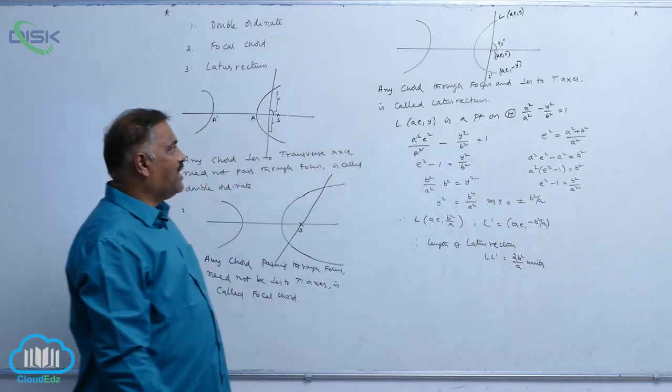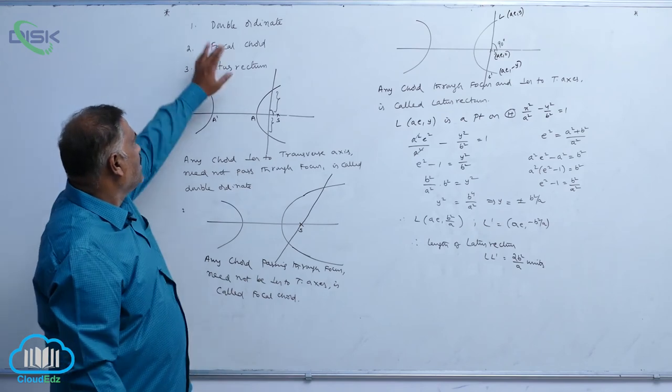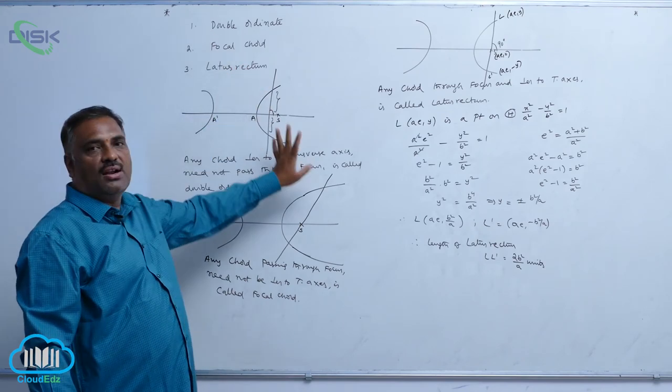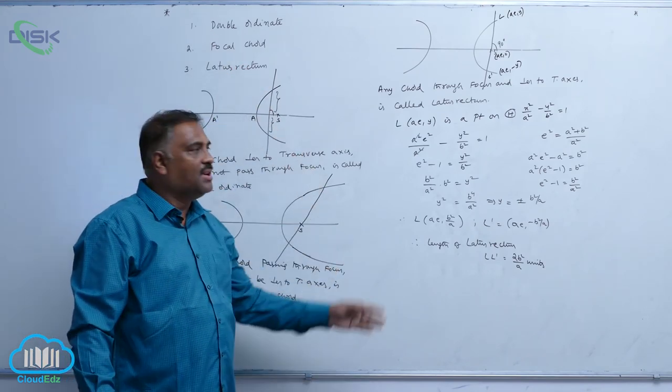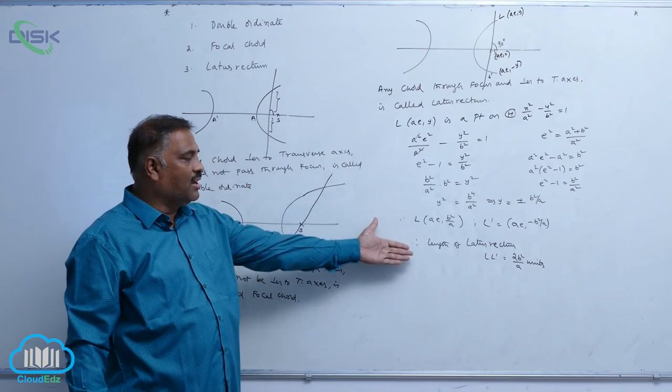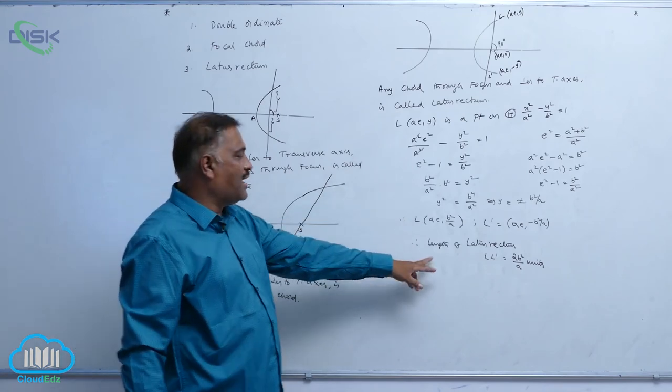So we have defined double ordinate, focal chord, and latus rectum, and also derived the length of the latus rectum as 2b²/a.